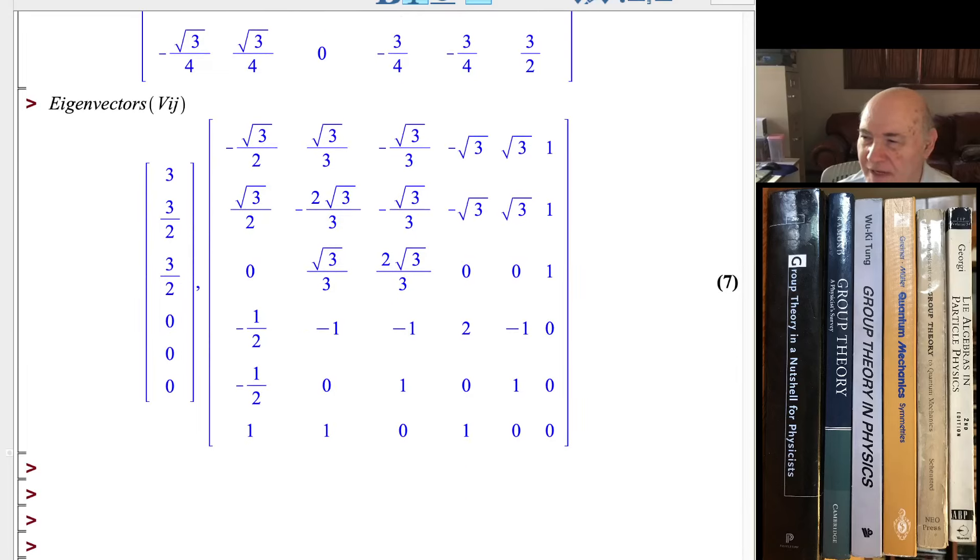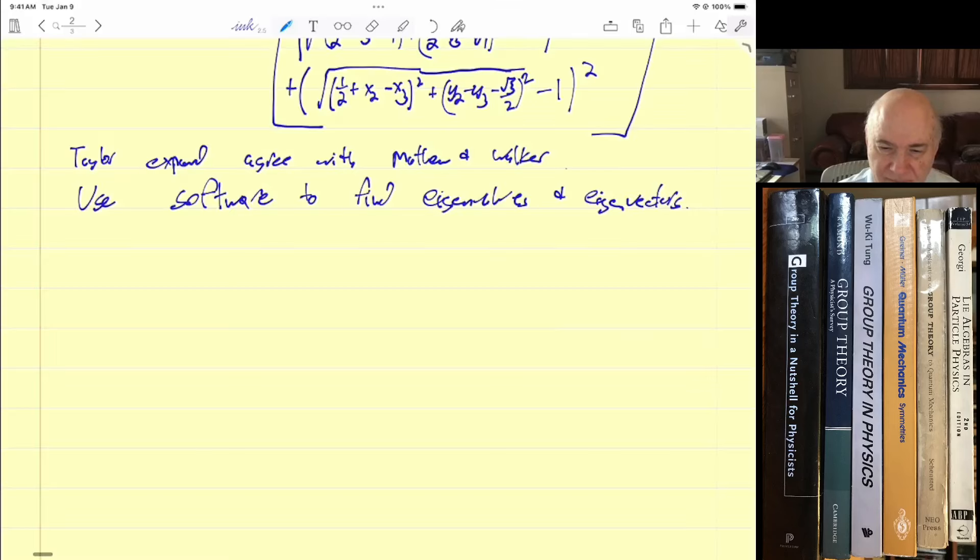So we expect with six degrees of freedom in a plane we're going to get two translational zero modes and we're going to get one rotational mode and we get that. Now the other eigenvectors, the three, three halves and three halves here, you have to work them out and think about them and it's much easier to do in the symmetry, but I'll just show them to you just for a second.